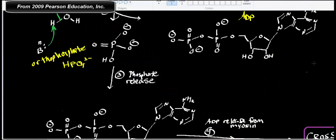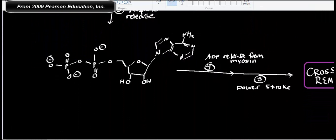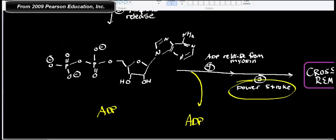This adenosine diphosphate, this ADP will get released. ADP leaves in this step right here. Adenosine diphosphate leaves. And so what that causes is the power stroke.